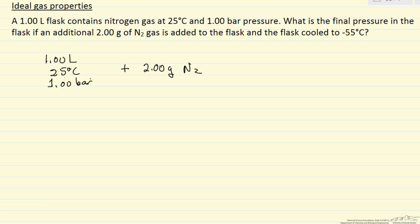You should be able to determine the number of moles and we're going to add two grams of nitrogen, we should be able to convert that to moles so that we can determine the new number of moles. Then we're going to cool it to minus 55 degrees C which is going to lower the pressure and we calculate the final pressure. So ideal gas law, the pressure times the volume.